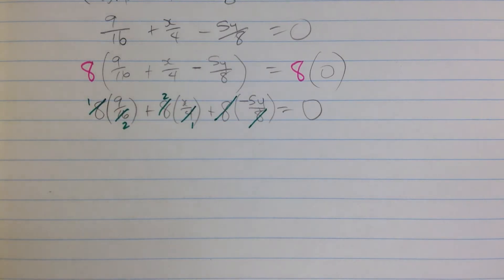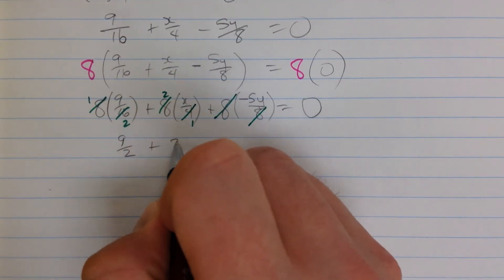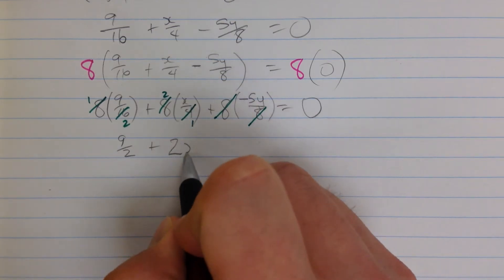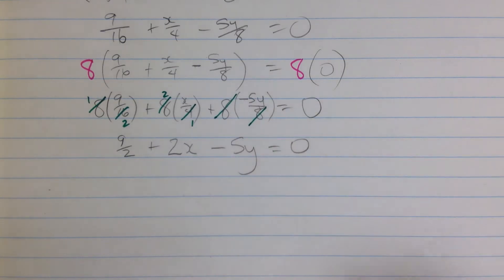So I'm left with, on this side, 9 halves, plus 2x. The 8ths are gone, I've got minus 5y equals 0.